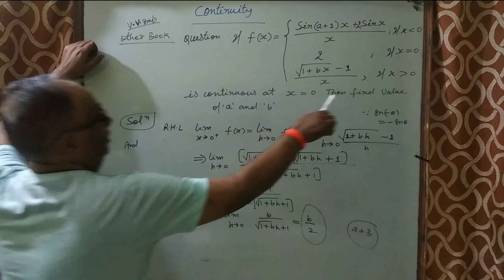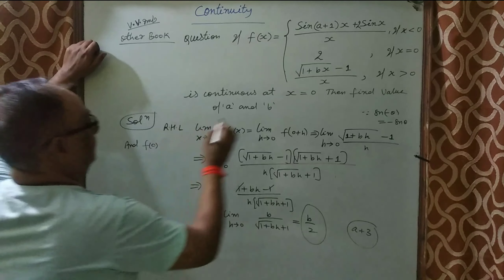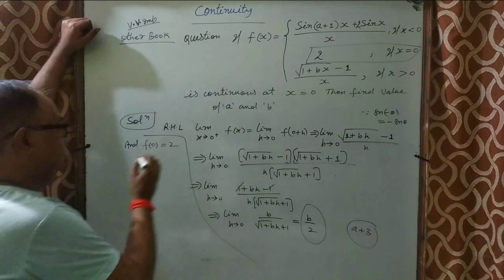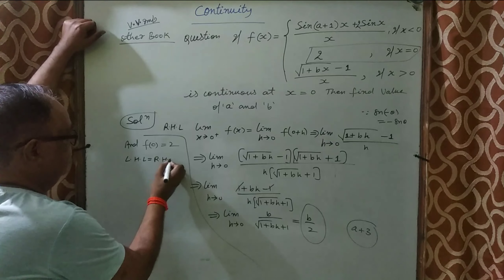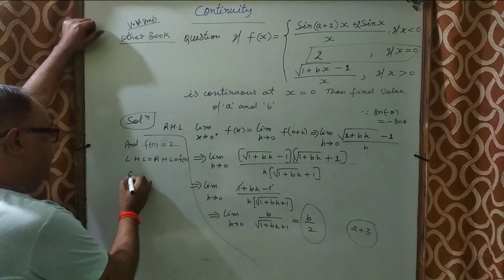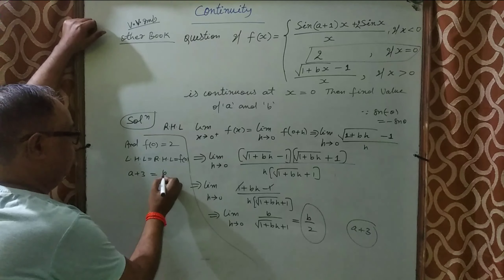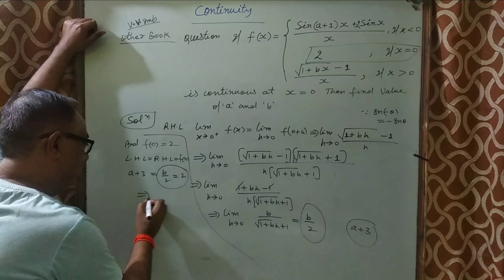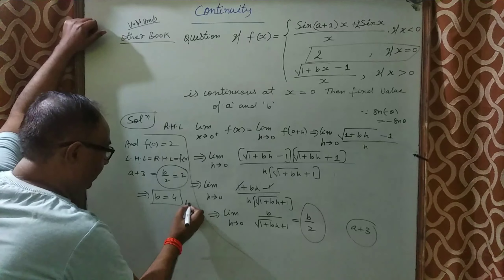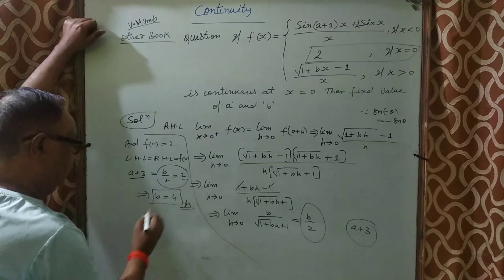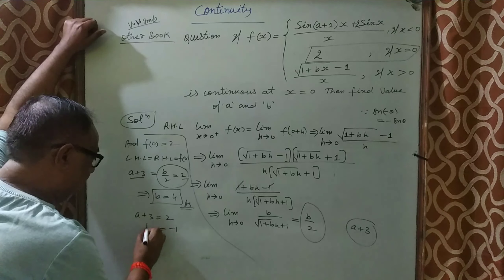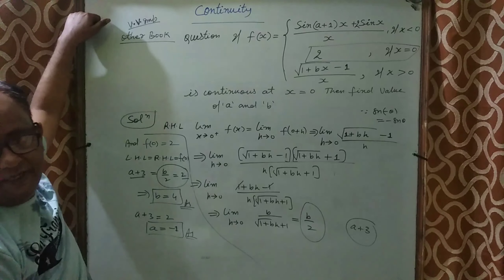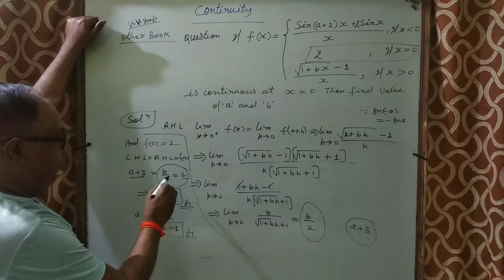f(0) is given as 2. According to the question the function is continuous, so LHL = RHL = f(0). Setting RHL = f(0): b/2 = 2, so b = 4. Setting LHL = f(0): a + 3 = 2, so a = −1. Therefore a = −1 and b = 4 when the function is continuous.